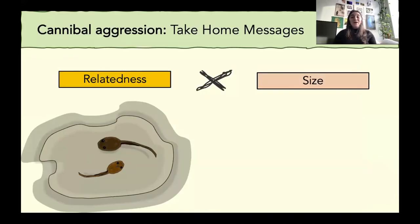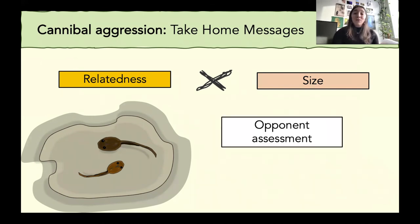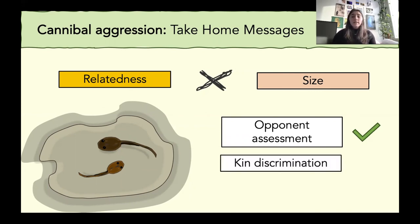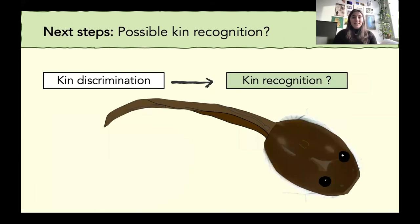So together, my big take-home message here is that we found a relatedness by size interaction in our cannibalistic tadpoles. And so is there an opponent assessment going on between these tadpoles? Are these tadpoles assessing each other? Absolutely. We see different levels of activity and different levels of aggression between different sized pairs. Is there kin discrimination in this species? Yes, I think so, based on the shift in total aggression and also the latency to aggression between various pairs.